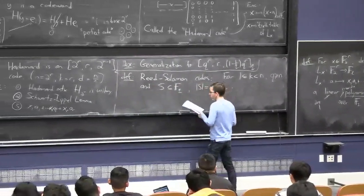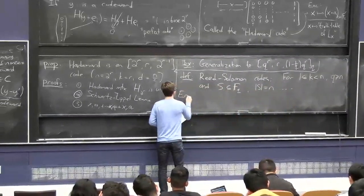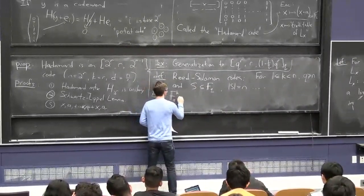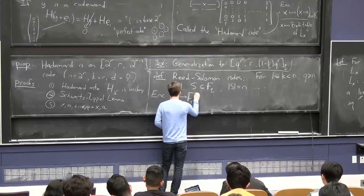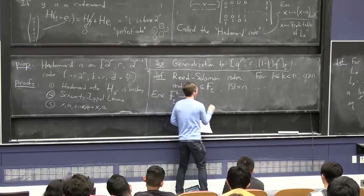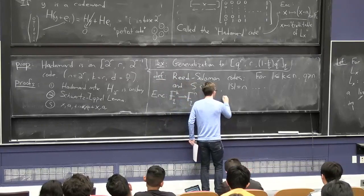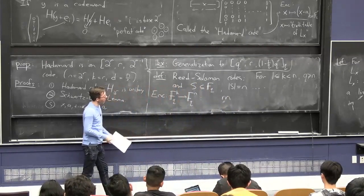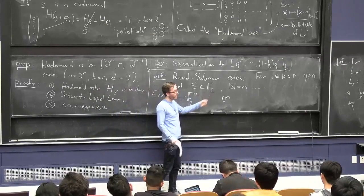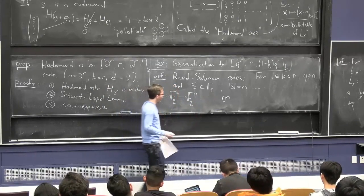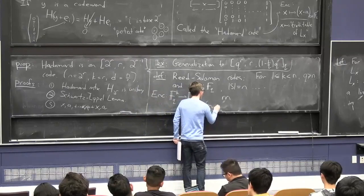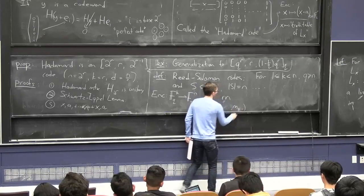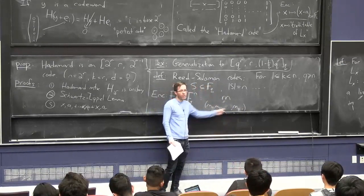The way Reed-Solomon codes are going to work is this. The encoding map, which maps vectors of length k to vectors of length n, works like this: You're given a message, and this is k symbols long, where these symbols are field elements. We're going to think of the message as defining a polynomial.